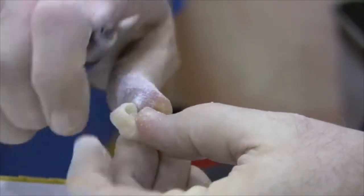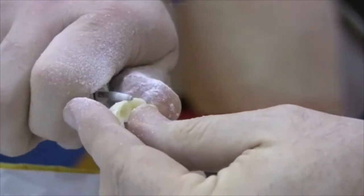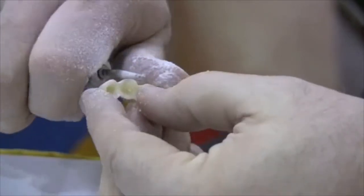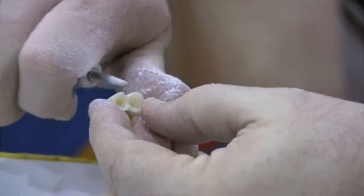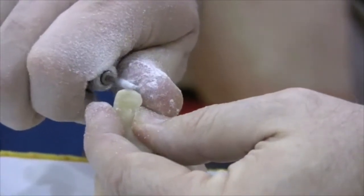One of the downfalls on bisacryl, particularly long span bridges, is the fact that material is very brittle. Tough Temp will remind you a little bit more along the fashions of a methyl methacrylate, which would bend a little bit before it breaks.